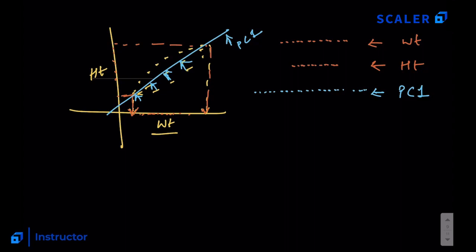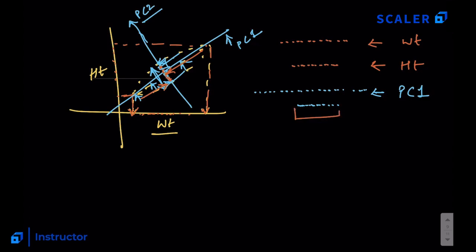Principal Component 1 is the axis that spans the most variation in the data. Principal Component 2, the orthogonal line to PC1, spans the second most variation in the data. All the values map to this second line, and when rotated horizontally you can see the variation explained by PC2. This demonstrates how PC1 represents the most variation in the data.